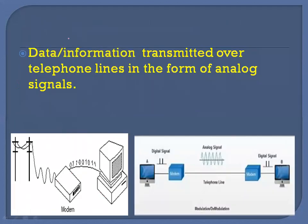Data or information can be transmitted over telephone lines in the form of analog signals. As I have told you, information stored in computers is in the form of digital data. The modem converts this digital data into analog signals so that it can be transmitted over telephone lines, because telephone lines can carry only analog signals.